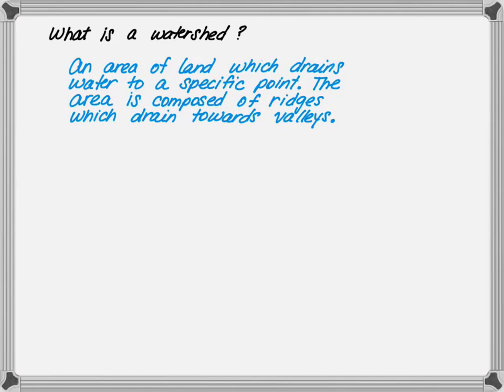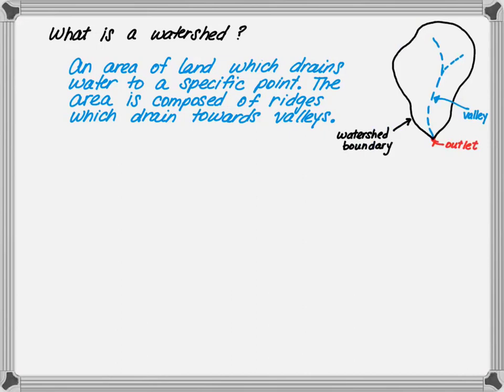By definition, a watershed is an area of land which drains water to a specific point. The area is composed of ridges which drain towards valleys. As shown in the simple schematic, the red dot is the outlet — this is the location where we're interested in determining the flow rate or discharge. The dashed blue line is the valley where the water will drain towards, and the watershed itself is outlined in black.